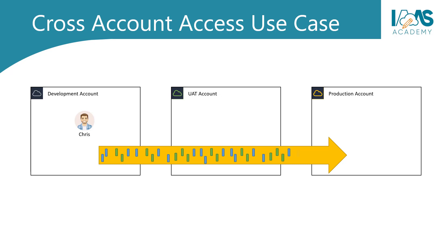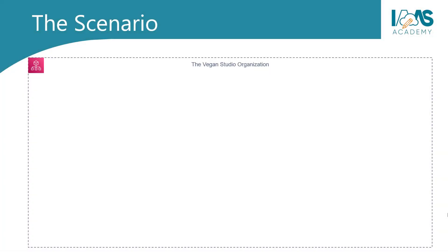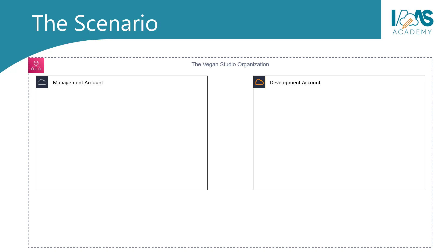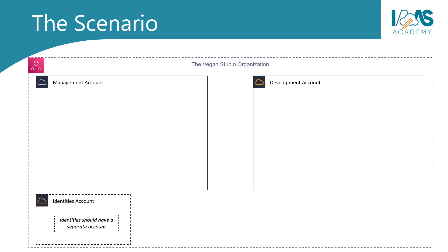Let us look at how we configure cross-account access in our example for our fictitious company, The Vagan Studio. In our example, we have a management account and a development account that are part of the AWS organization. In the real world, you're likely to have many more accounts — for example, you would have a separate identities account to ensure all identities are securely managed in one AWS account. This is much better than having multiple IAM accounts for the same person across multiple AWS accounts.